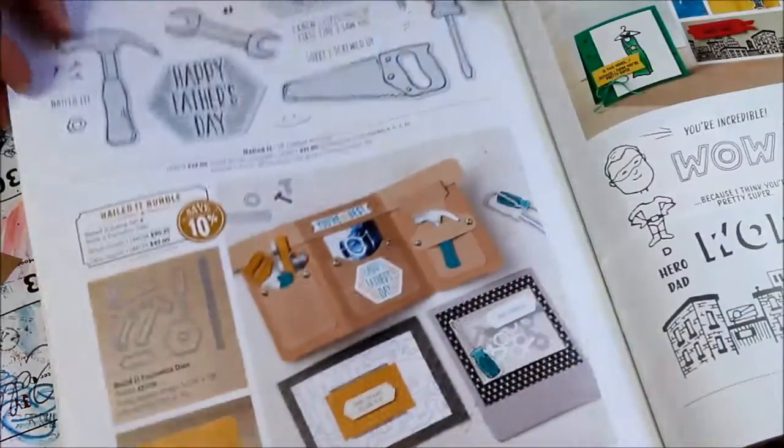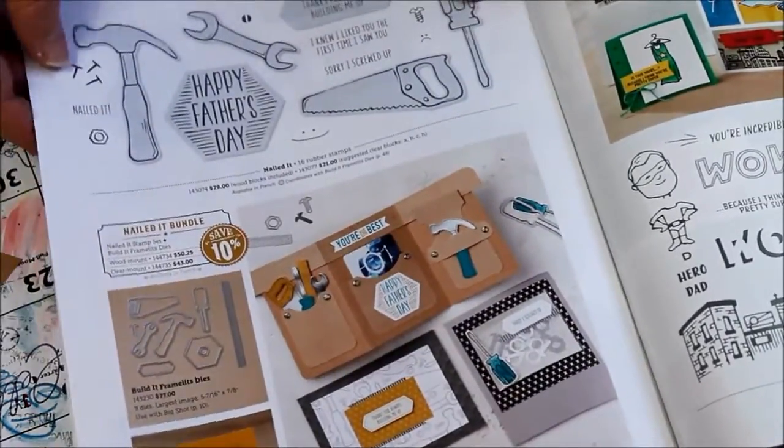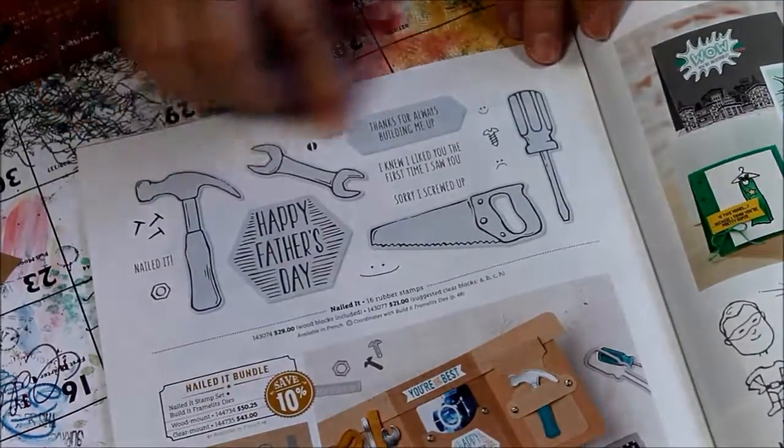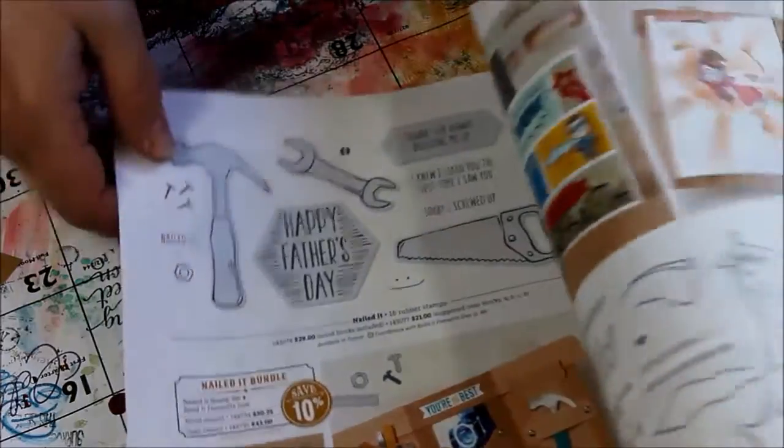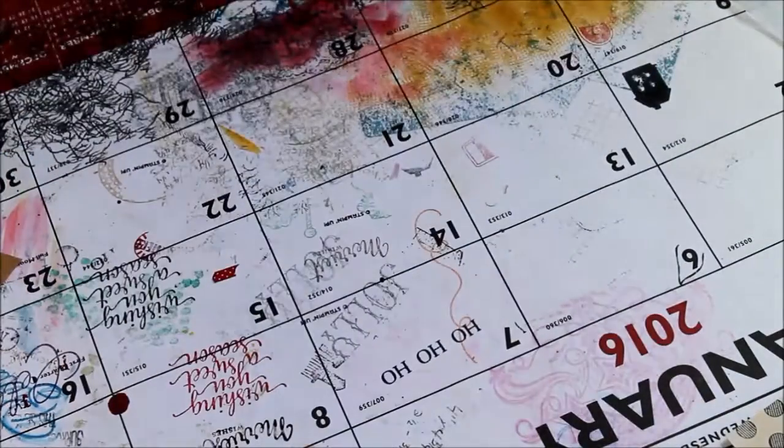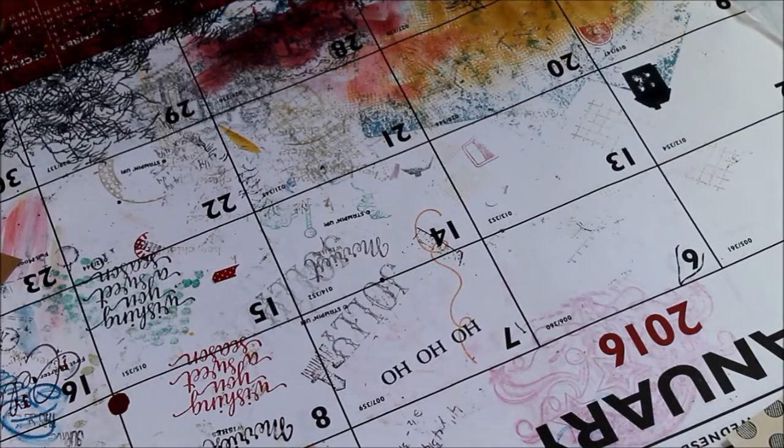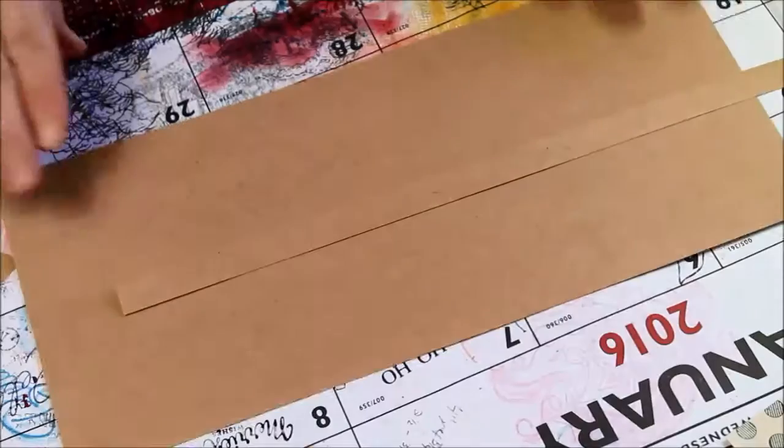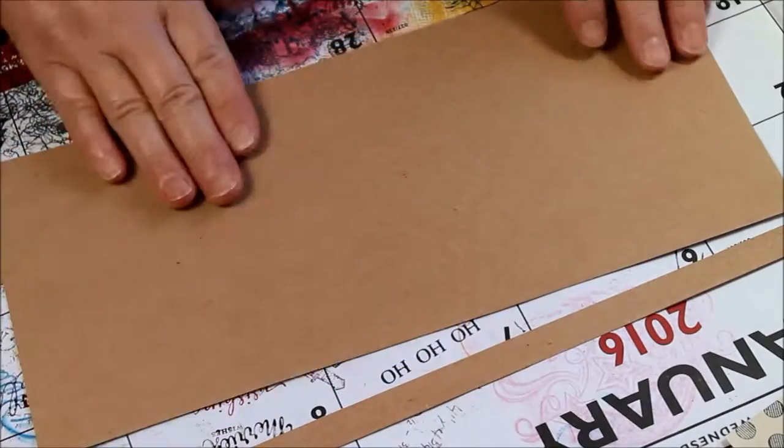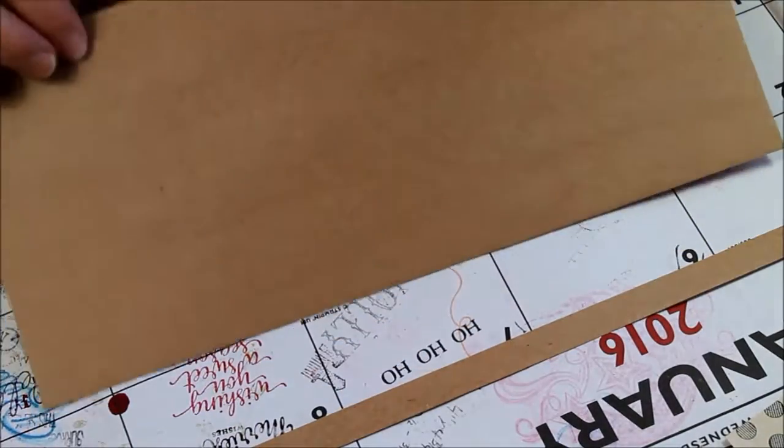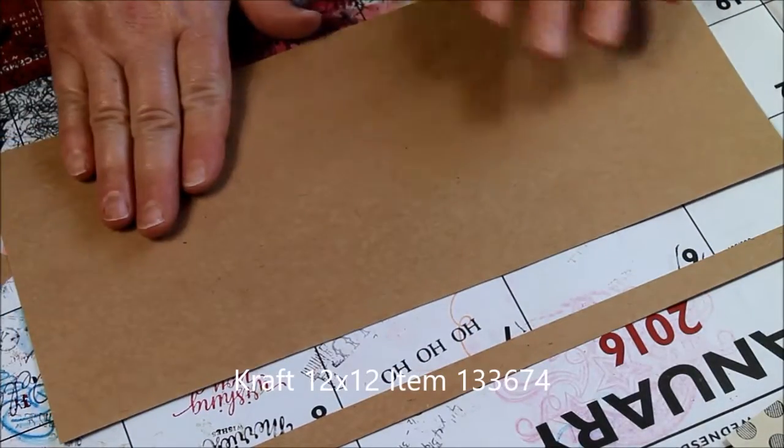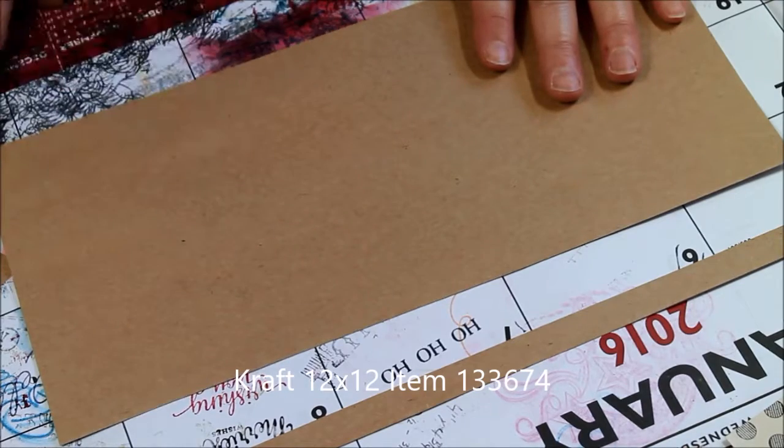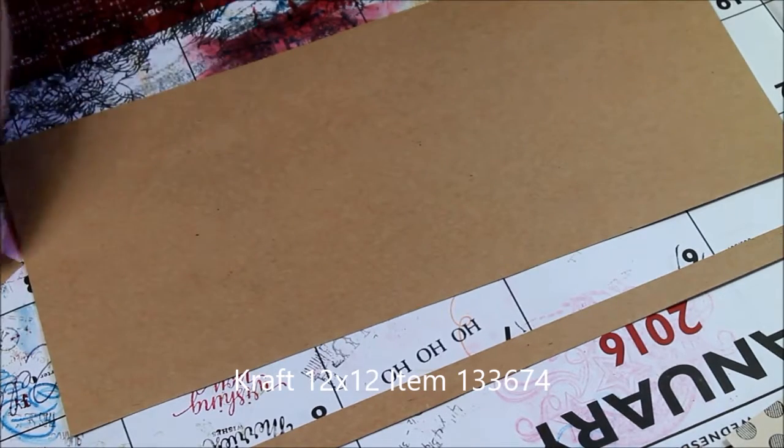So, let's get started here. As I said, this is an accordion fold card. I started going with my masculine theme. I'm using the craft paper. It's a little bit heavier. And it's 12 by 12. We need a 12 by 12 paper for this.